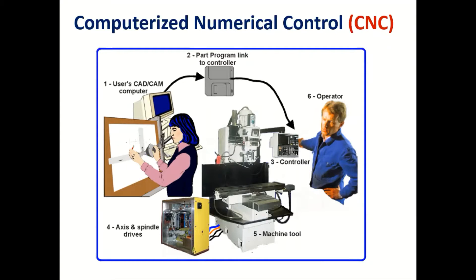In CNC machine — computer numerical control machine — a dedicated computer is used to perform most of the basic NC machine functions like the spindle of the machine tool, drive motors, or the table movements. Whatever programs you have written through the keyboard on the computer are sent to the machine control unit, and then transferred to the machine tools, meaning the NC machine tool.